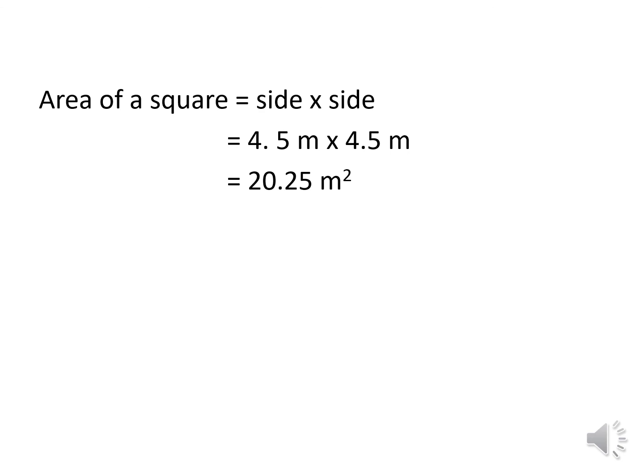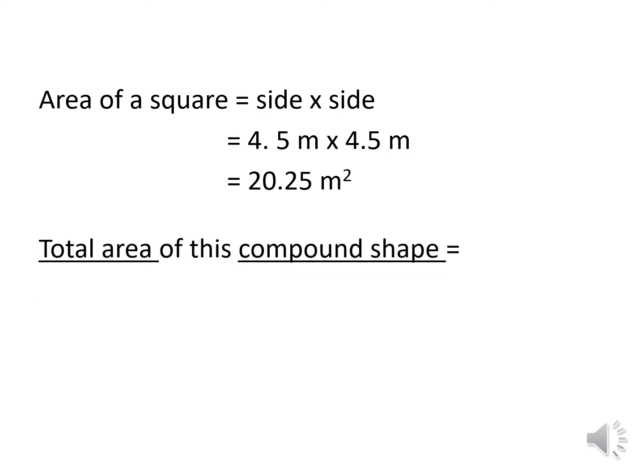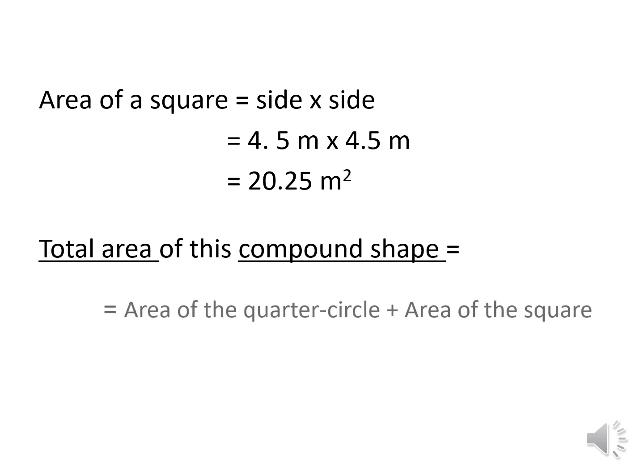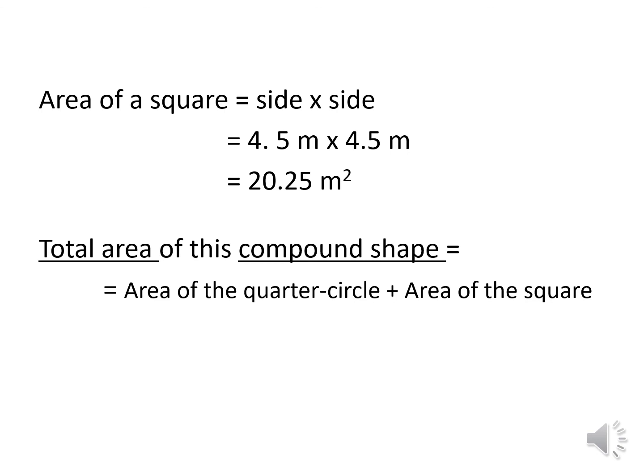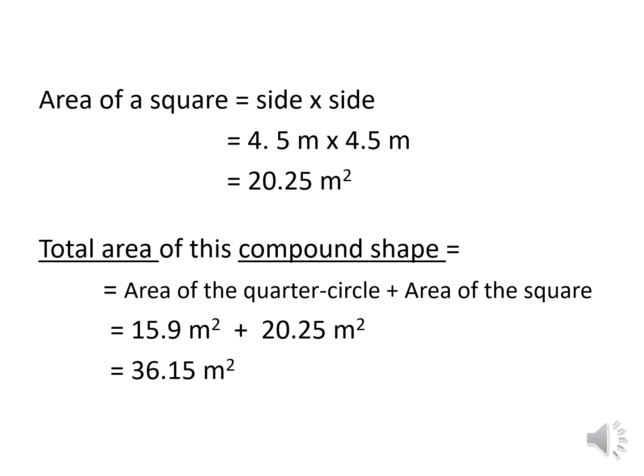We have to find the total area of this compound shape — the square and the quarter circle together. We add them: area of the quarter circle plus area of the square. The area of the quarter circle is 15.9 meter square and the area of the square is 20.25 meter square. Adding together, the final value is 36.15 meter square. The total area of this compound shape is 36.15 meter square.